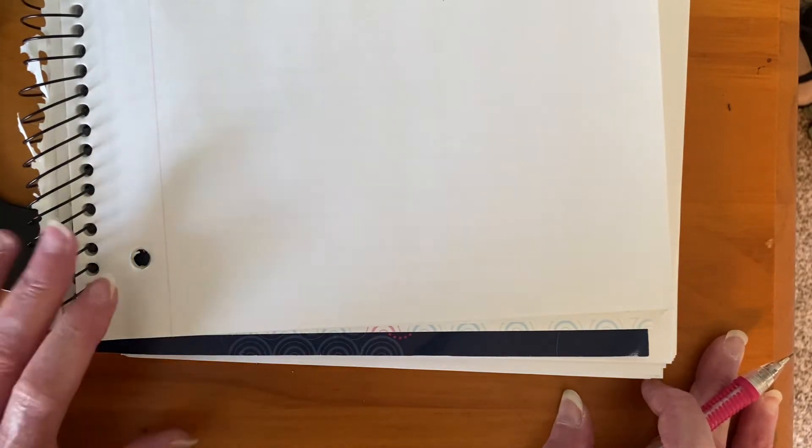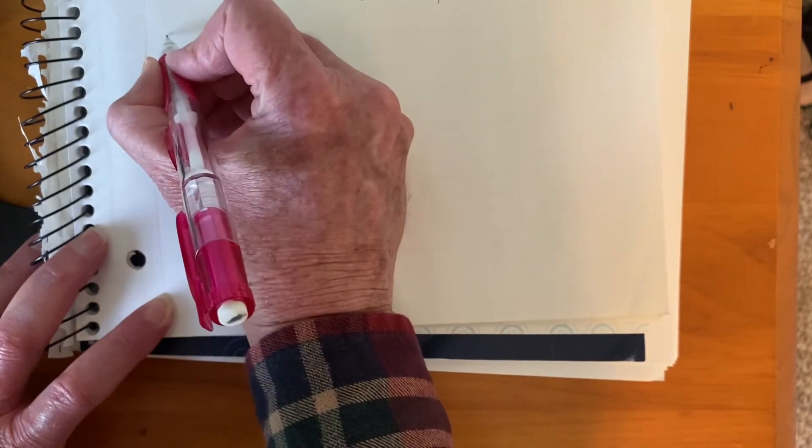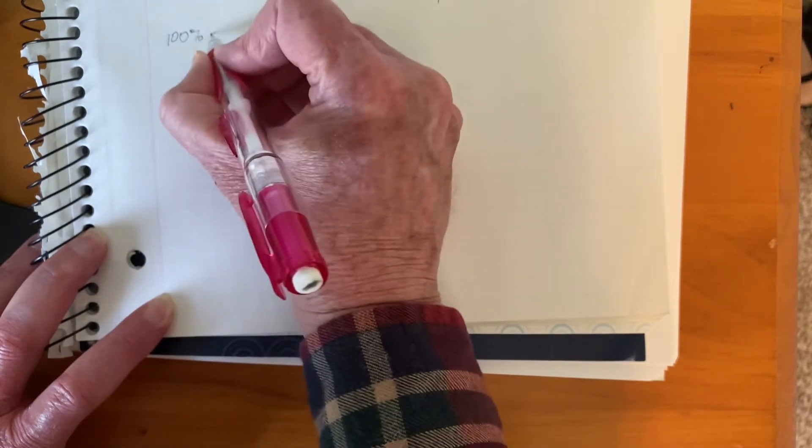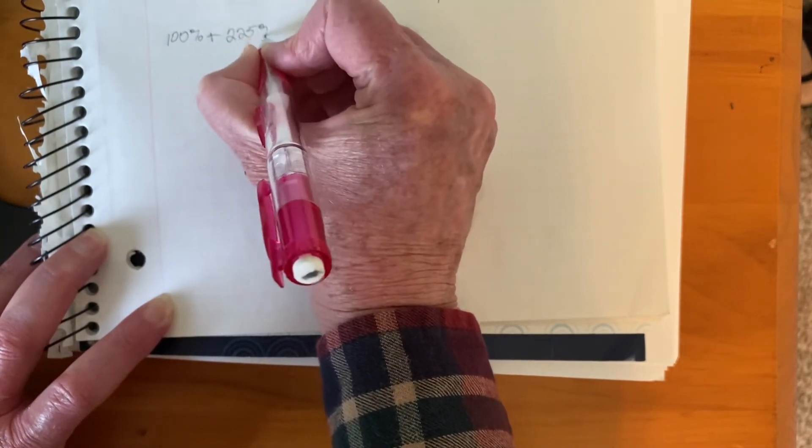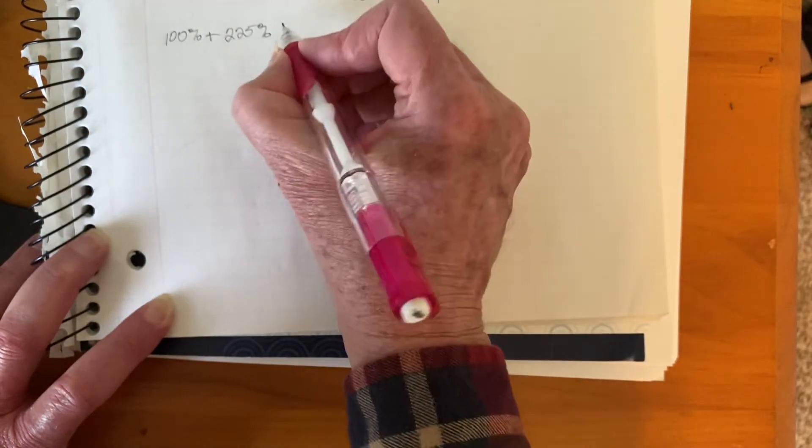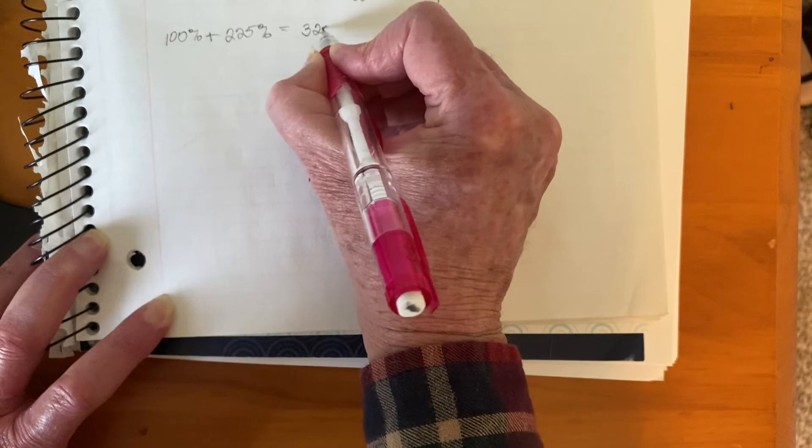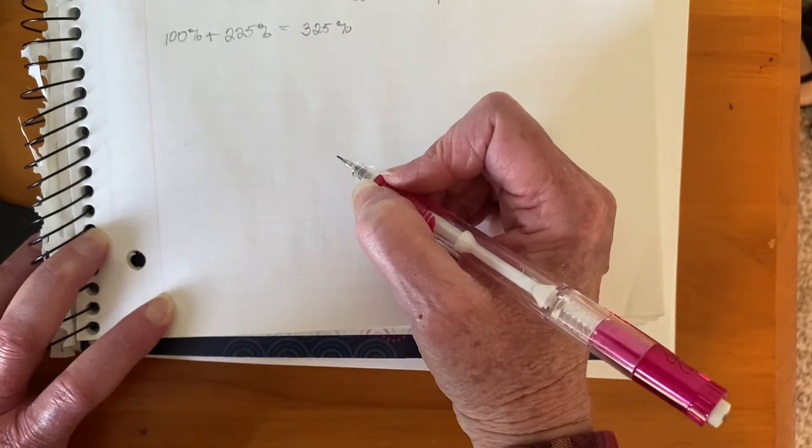So we want to figure out what was the original price. Now, something you have to be careful about is you paid 100%, and then as a store you added 225% onto it for your markup. So that means the cost of the boots is really 325%.